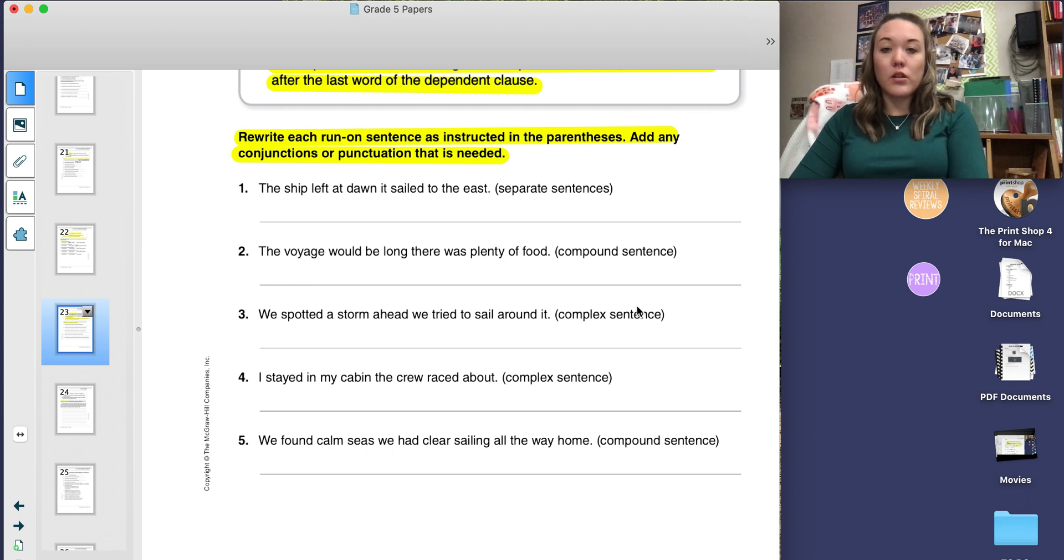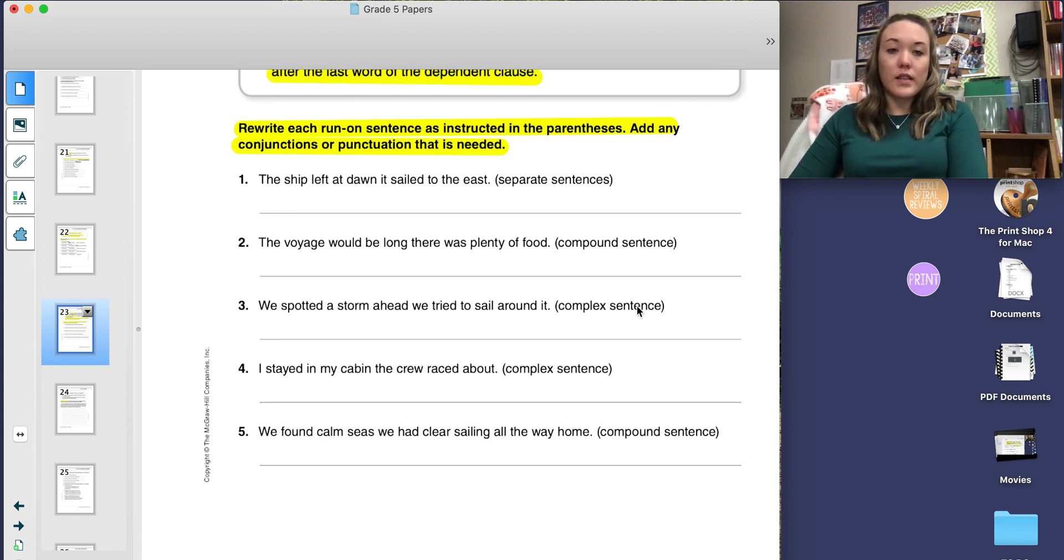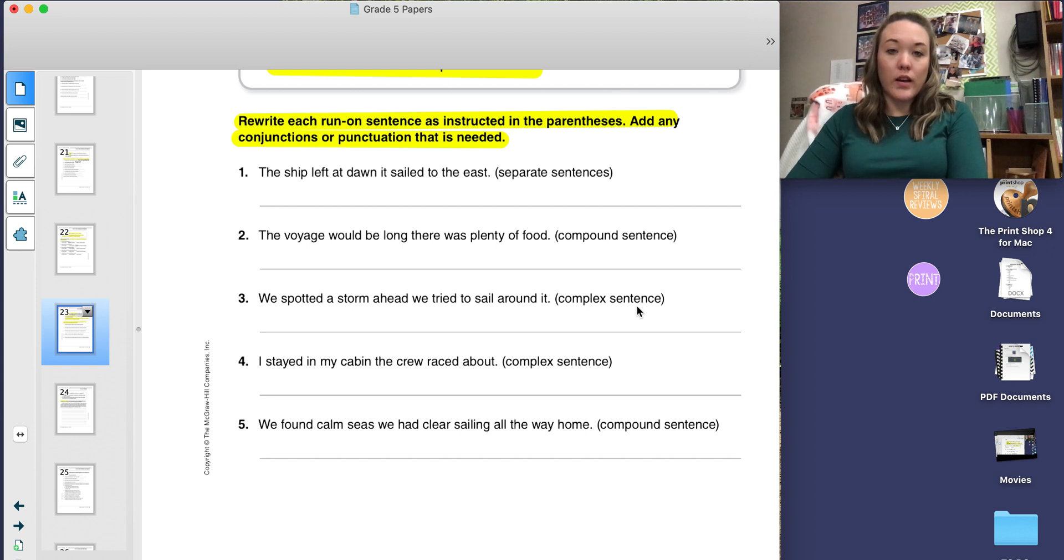We're going to do three examples together, one of each kind. Number one says, the ship left at dawn, it sailed to the east. The parentheses tell me to separate these sentences. I notice my first subject is the ship. My second subject is it. So I'm going to add a period after dawn and make the I in it capitalized.